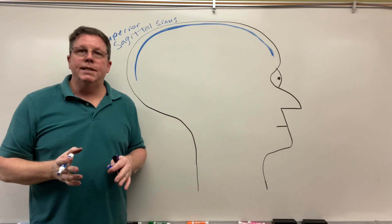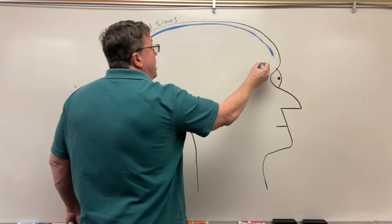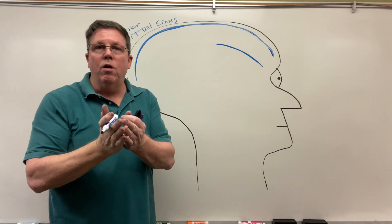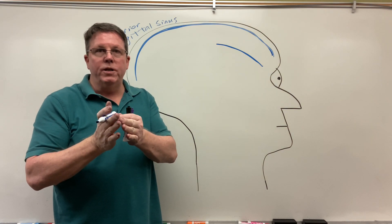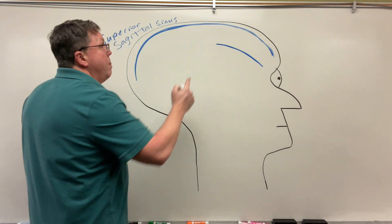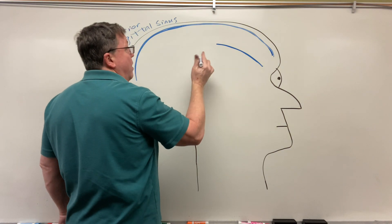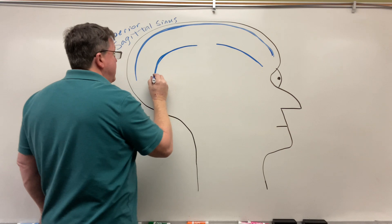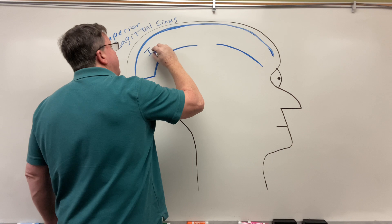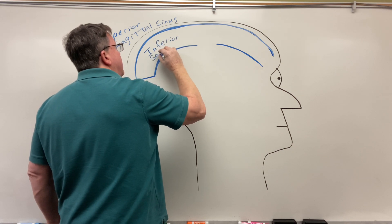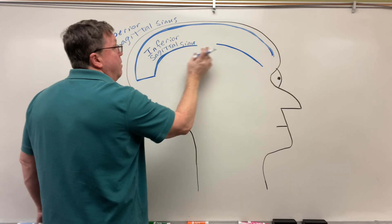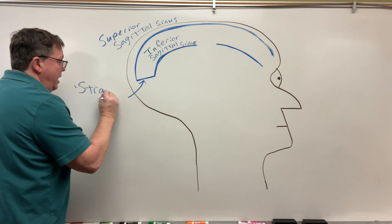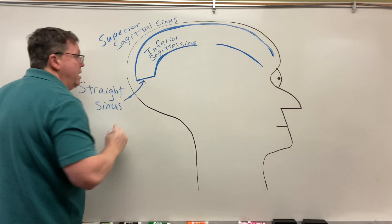Now if I have a superior sagittal sinus, I obviously must have an inferior sagittal sinus. The inferior sagittal sinus drains the lower part of that longitudinal fissure where the falx cerebri is — the top of the falx cerebri is the superior, this would be near the bottom. I'm going to have my inferior sagittal sinus come like this, and then it goes straight over — this is my straight sinus, and you can see why it's called the straight sinus: it is straight.